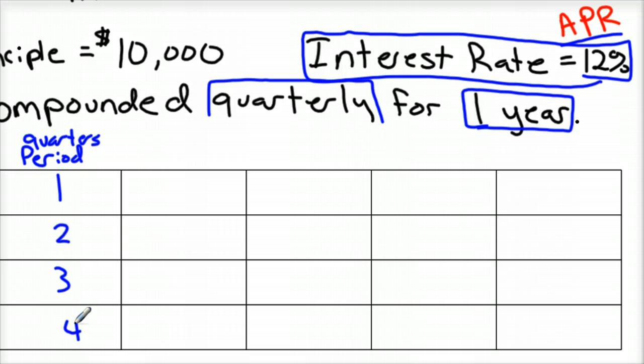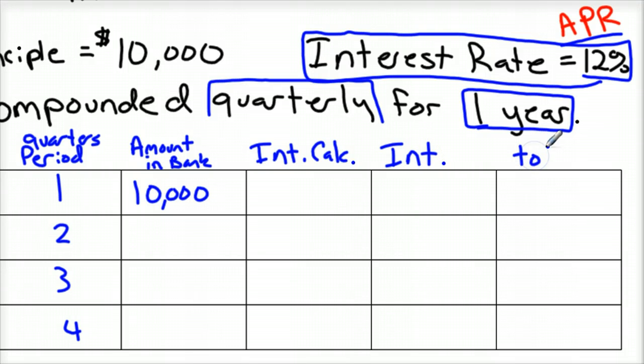This is the amount in the bank. So in quarter one, we started with $10,000. This is our interest calculation. And this will be our interest. And this last one is going to be our total at the end of the quarter.